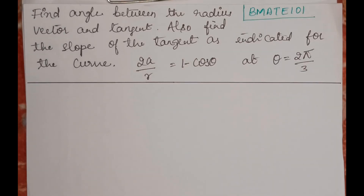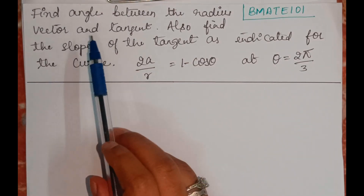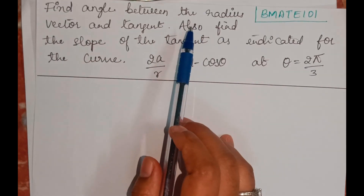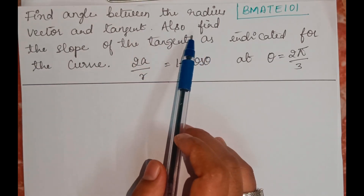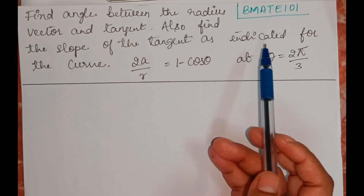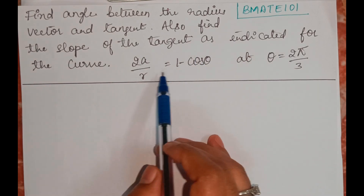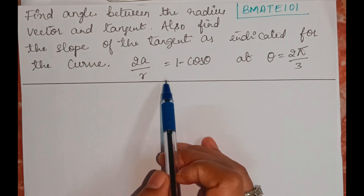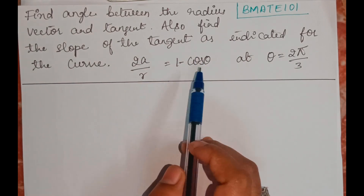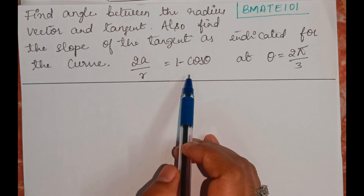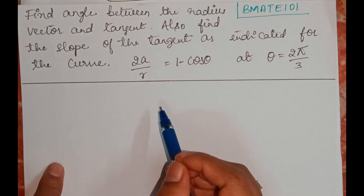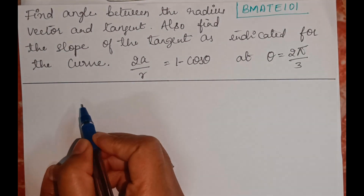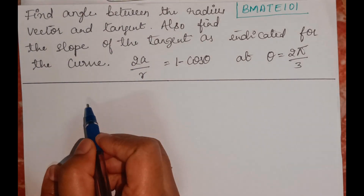Hello everyone, welcome back to my YouTube channel Learn with Sumi. In this video we'll be finding the angle between the radius vector and tangent, and also we'll find the slope of the tangent as indicated for the curve 2a/r = 1 - cosθ at θ = 2π/3.